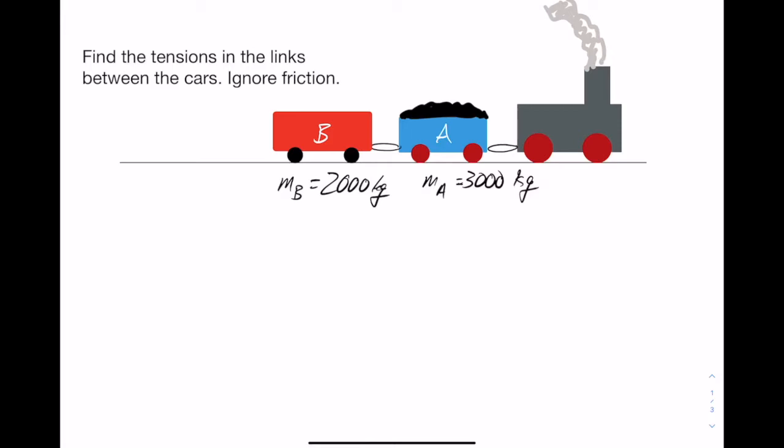So in this example, we have a very short train. We have one coal car and then the caboose. And we want to know the tensions in the links between the two cars as the train speeds up. The coal car here, car A, has a mass of 3,000 kilograms, and the caboose has a mass of 2,000 kilograms. So we're told to ignore the friction between these cars and the track. Of course, the locomotive has to have some friction between its wheels and the track so that it can speed up, but we're not worried about the forces on the locomotive. We're worried about the tensions.